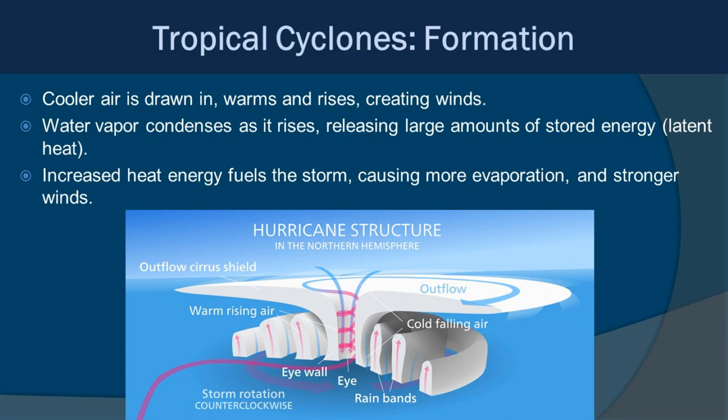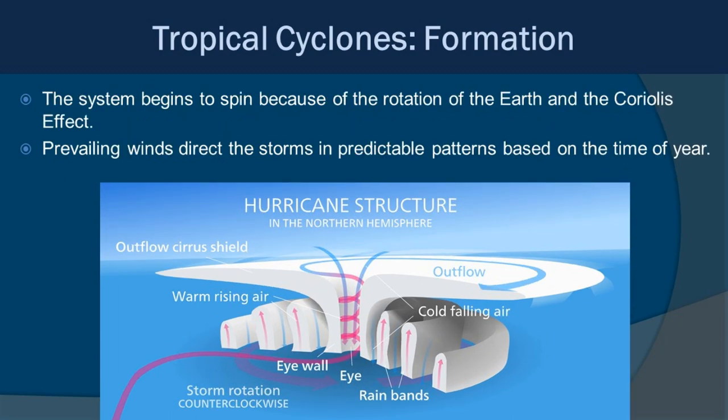In a healthy storm, you're going to have outflow and inflow coming into the storm, rising warm air, high condensation, and lots of energy being released. The system itself begins to spin because of the Earth's rotation — specifically the Coriolis effect that we talked about when we discussed atmospheric winds and circulation. The prevailing winds in a particular area at a particular time of year are going to help steer these storms in different directions.